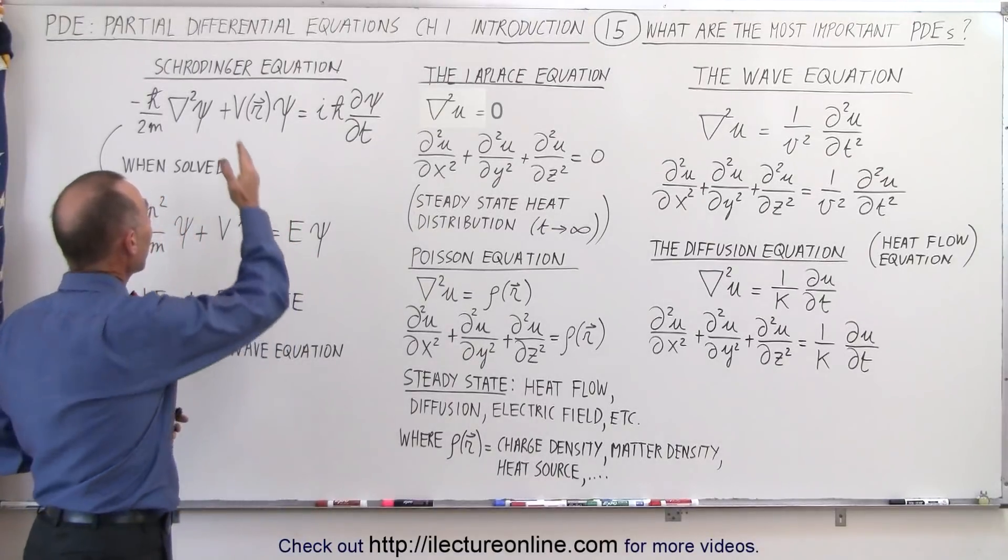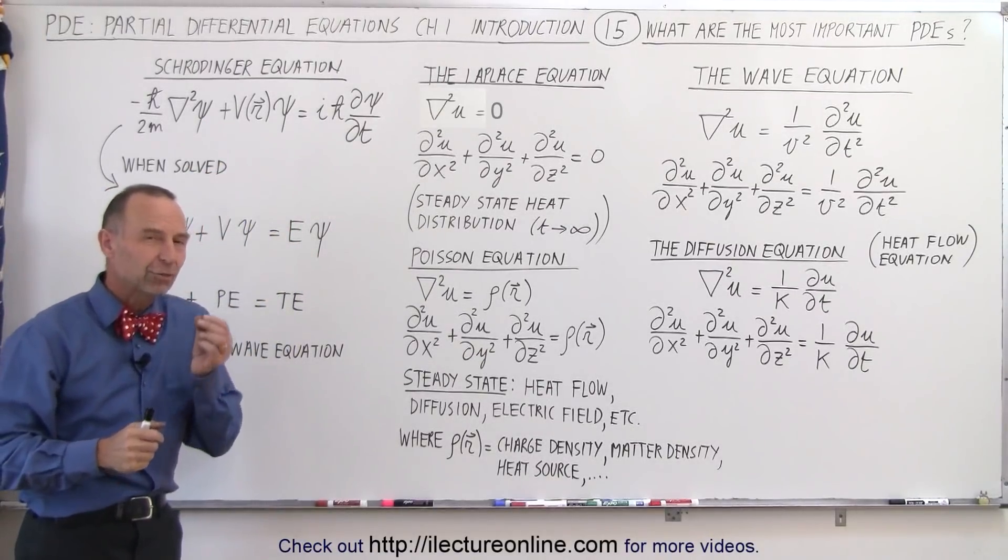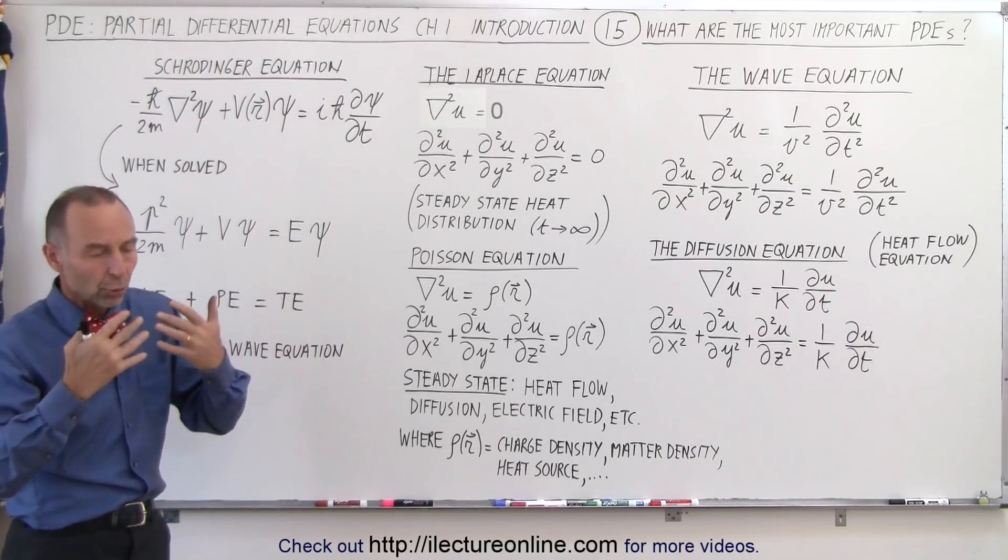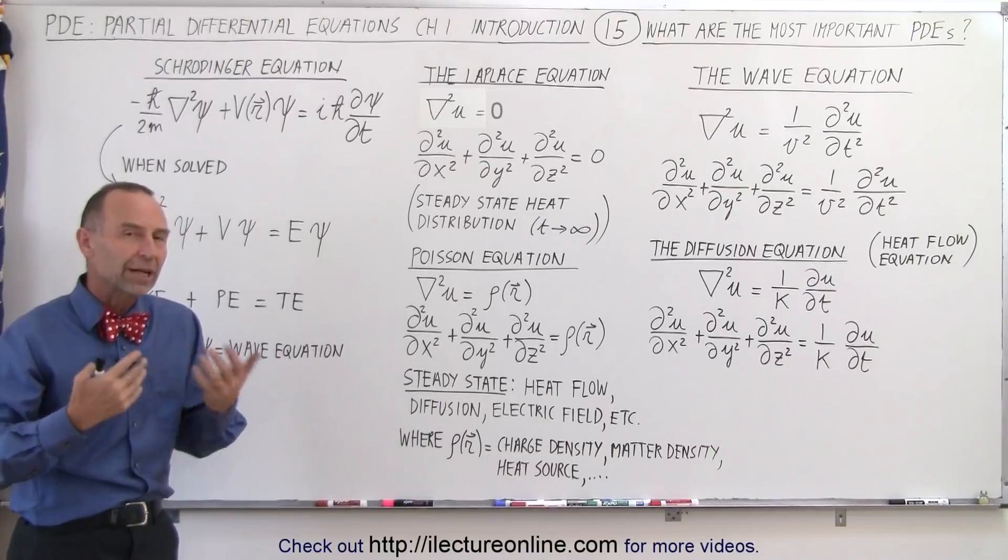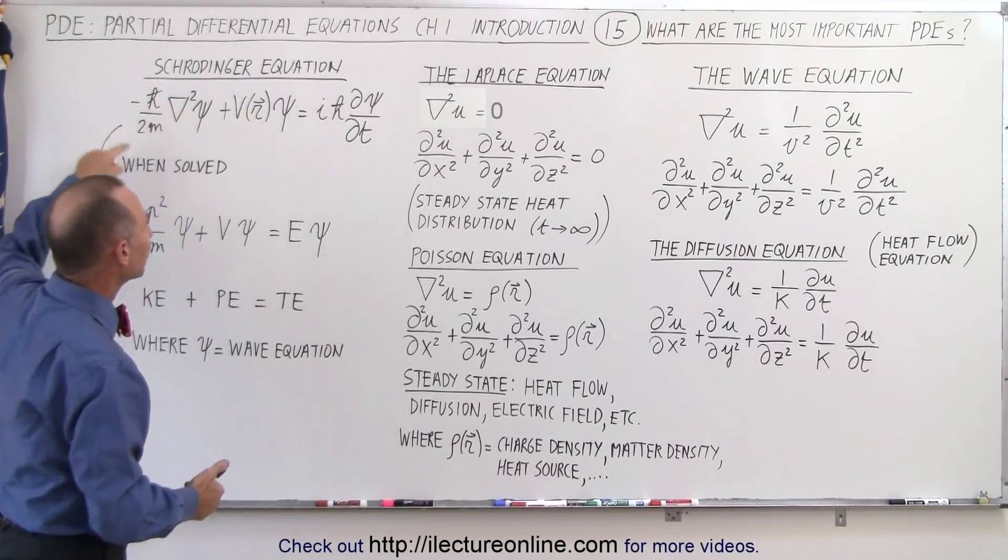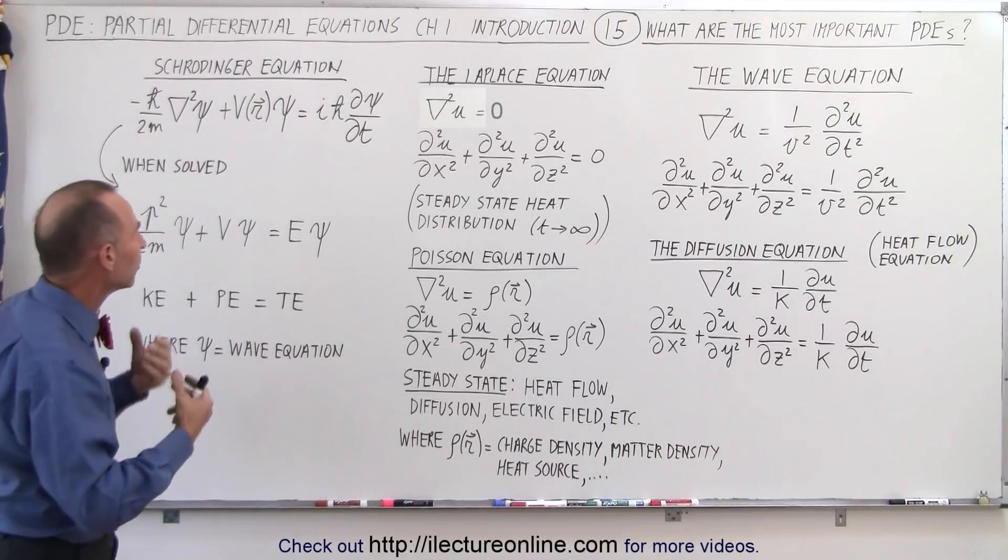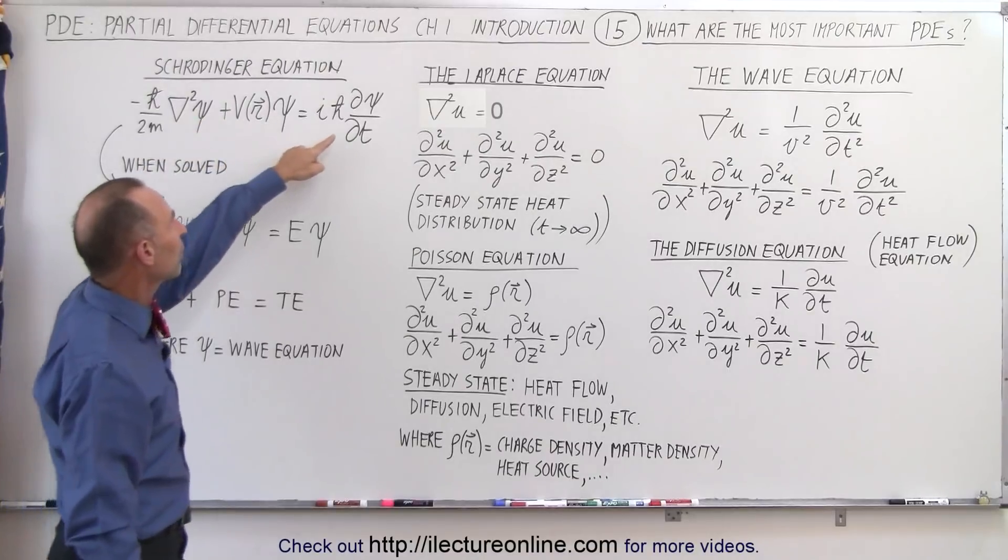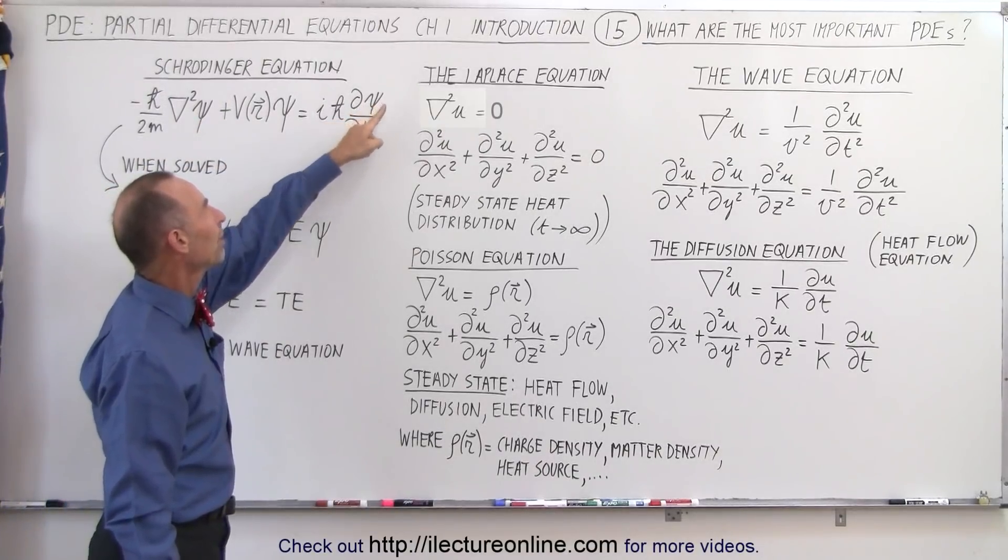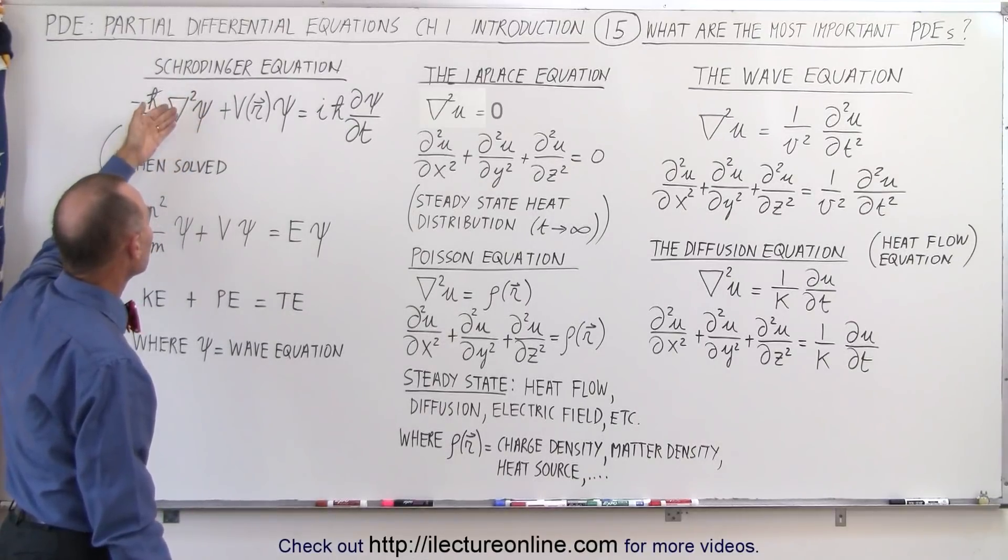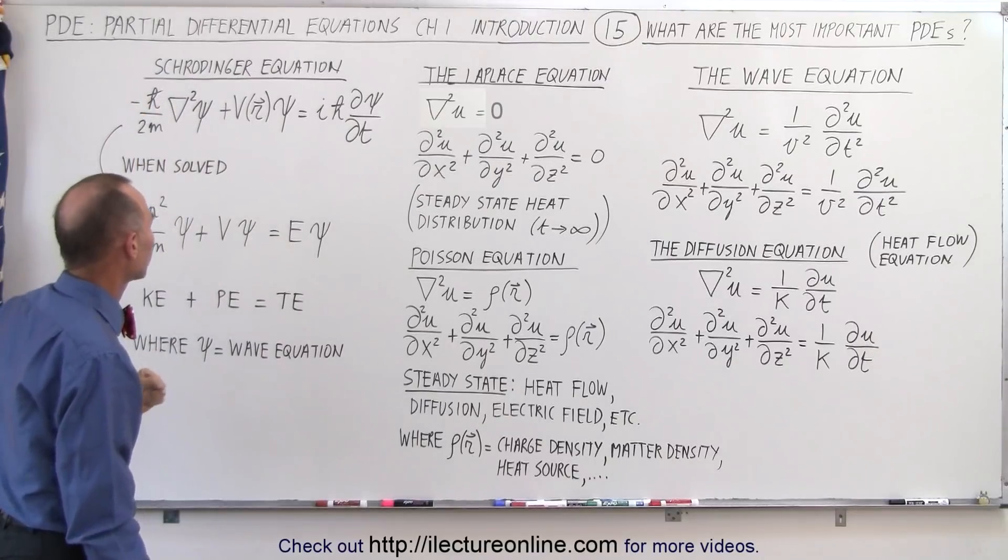And finally, we have the Schrödinger equation. The Schrödinger equation explains the wave function of very small particles - photons, or electrons, or protons moving at high velocities. We can then use the Schrödinger equation to predict their location and their velocity, their momentum, at some point in time. Notice on the right side we have the partial derivative of the wave function with respect to time. On the left side we have the Laplacian, which means we can have a three-dimensional situation, a two-dimensional situation, or a one-dimensional situation.